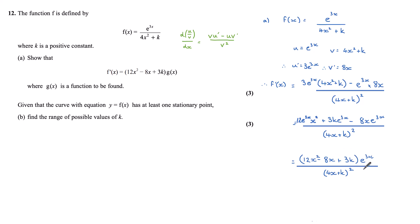We can take a factor of e^(3x) out on the numerator, leaving us with 12x² - 8x + 3k. Notice that is what we want to show. And so we've got our f'(x) equal to (12x² - 8x + 3k) times the function g(x), and we have g(x) to be e^(3x) over (4x² + k)².